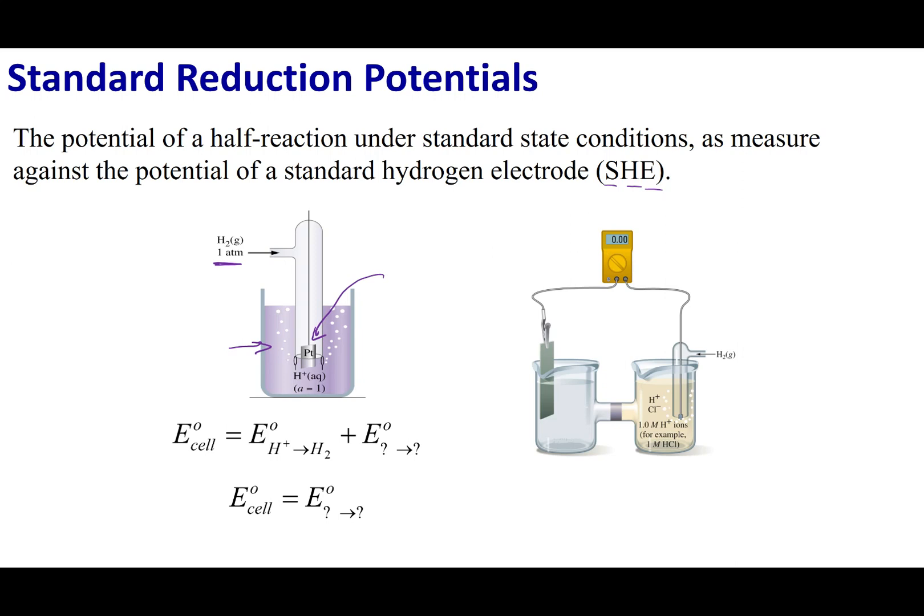Now to help conduct electricity because I have a gas and a liquid, I'm going to use a platinum electrode. Now the platinum isn't going to do any chemistry. It's just there to serve as a wire for electrons to move in and out and get in contact to my aqueous H+ and my hydrogen gas.